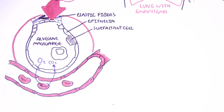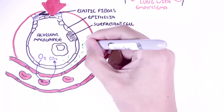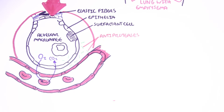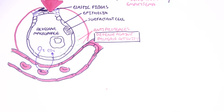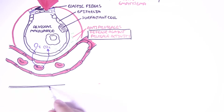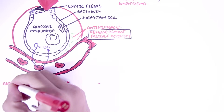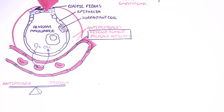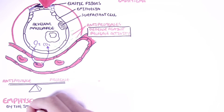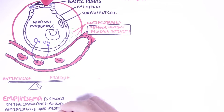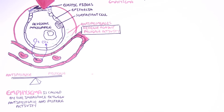Normally, the alveolus will secrete anti-proteases, which will essentially protect it against protease activity. So usually there's a balance between anti-protease and protease — proteases cause destruction or damage, and anti-proteases will prevent this from occurring. Emphysema is caused by the imbalance between anti-protease and protease activity, so if there's more protease activity, there will be more damage.